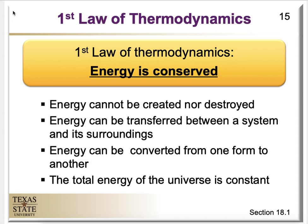The first law of thermodynamics says that energy is conserved. This is something you utilized in General Chemistry 1 to find the change in energy of a system by looking at heat, work, and the conversion between kinetic and potential energies. Since energy is conserved, energy cannot be created or destroyed. Energy can be transferred between a system and its surroundings, and the total energy of the universe remains constant.